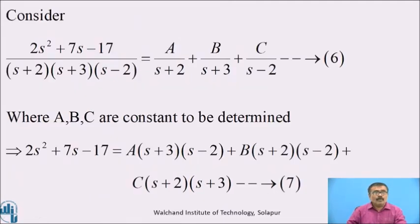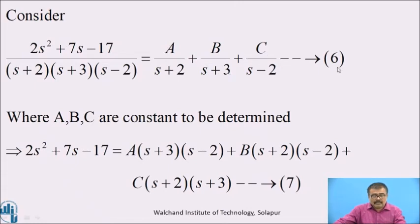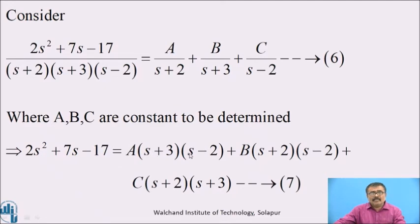Consider (2s² + 7s − 17) / [(s + 2)(s + 3)(s − 2)]. The three linear factors can be separated by partial fractions as A/(s + 2) + B/(s + 3) + C/(s − 2). Call this equation 6, where A, B, C are constants to be determined. Taking LCM on the right-hand side, 2s² + 7s − 17 = A(s + 3)(s − 2) + B(s + 2)(s − 2) + C(s + 2)(s + 3). Call this equation 7.